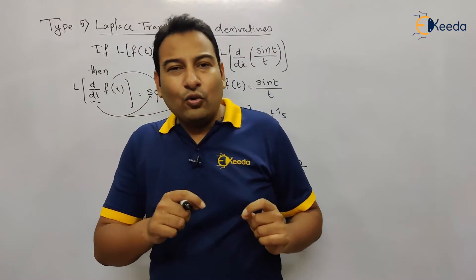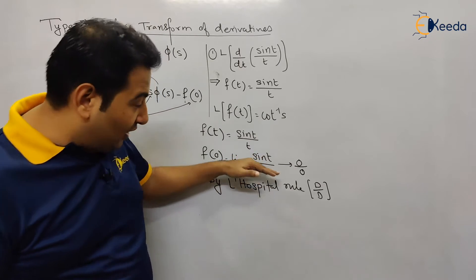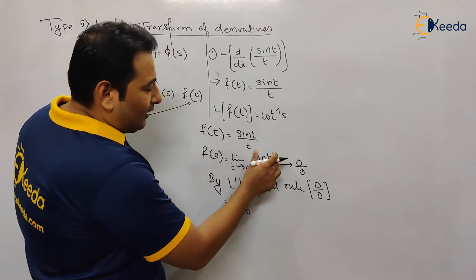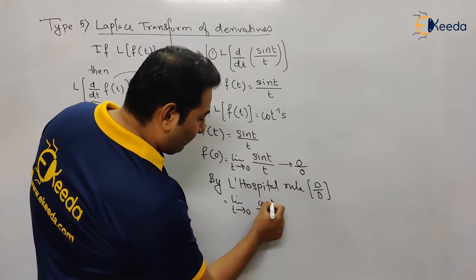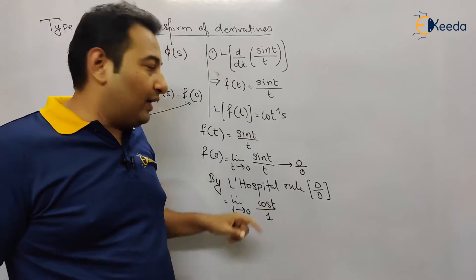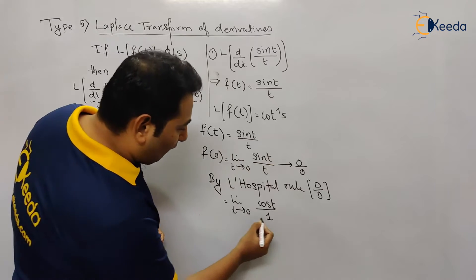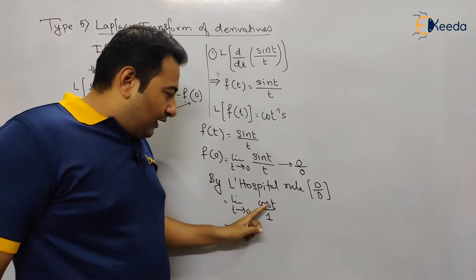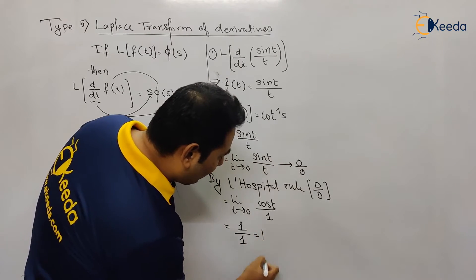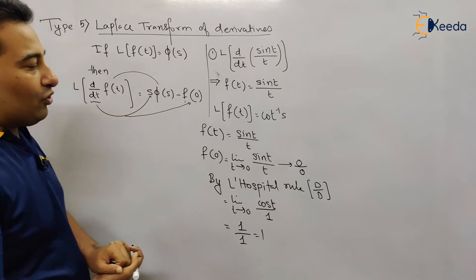L'Hôpital's rule says: take the derivative of the numerator separately and the derivative of the denominator separately — it is not the u/v rule. So we get limit t→0 of cos t / 1. Putting t = 0: cos(0) = 1, and denominator = 1, so the answer is 1/1 = 1. Therefore f(0) = 1.